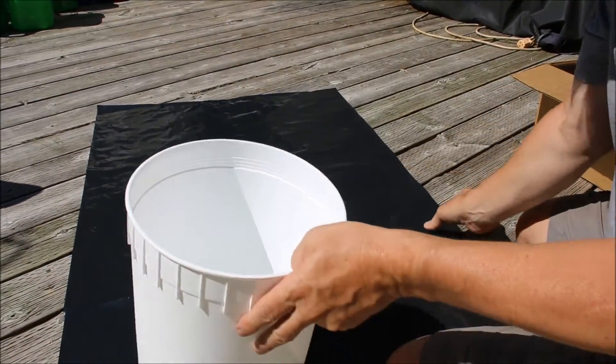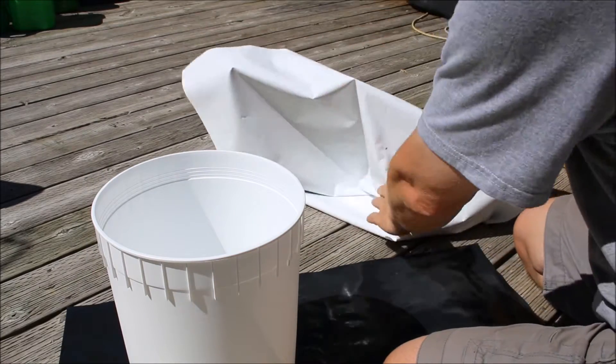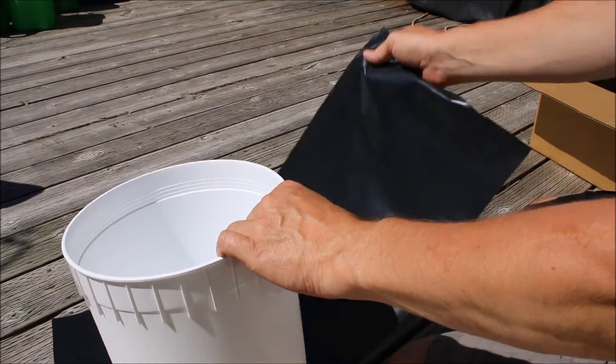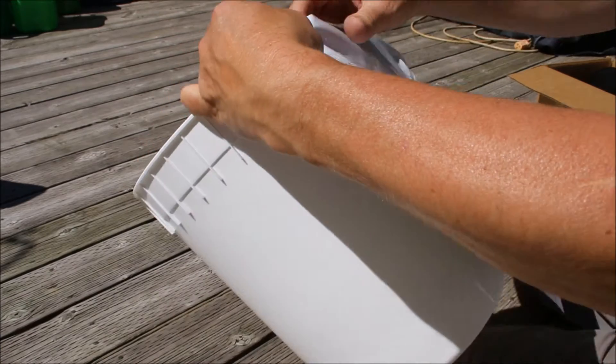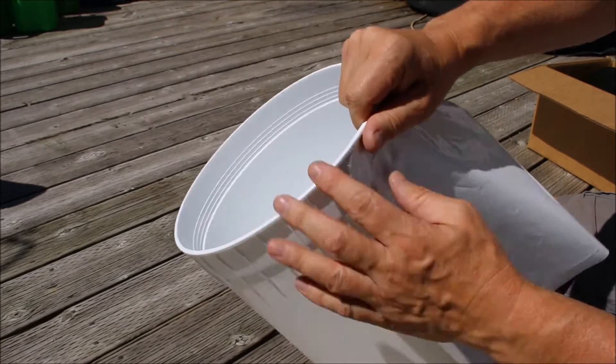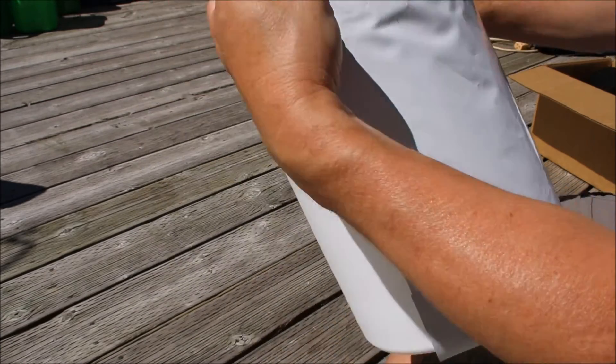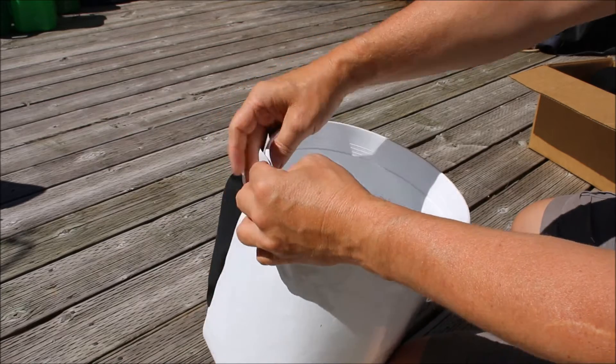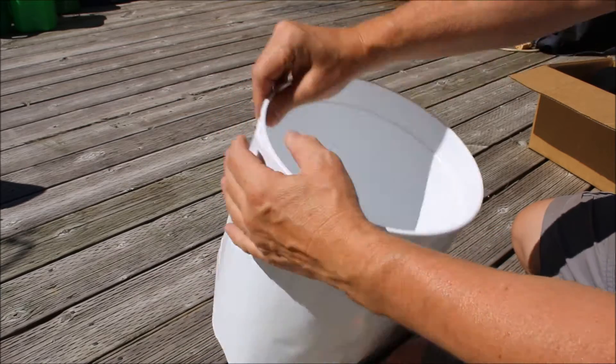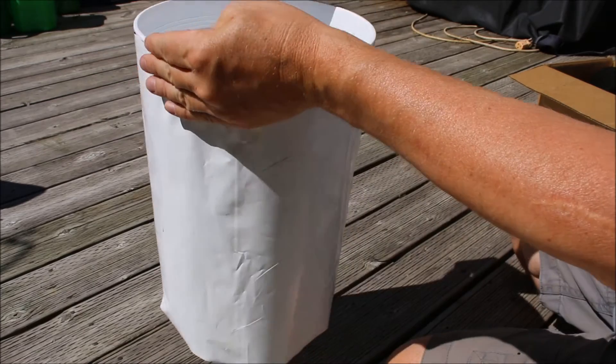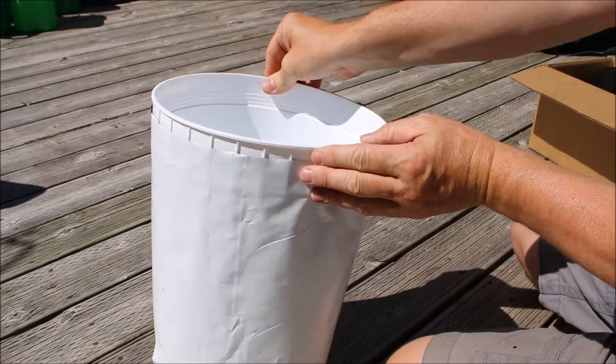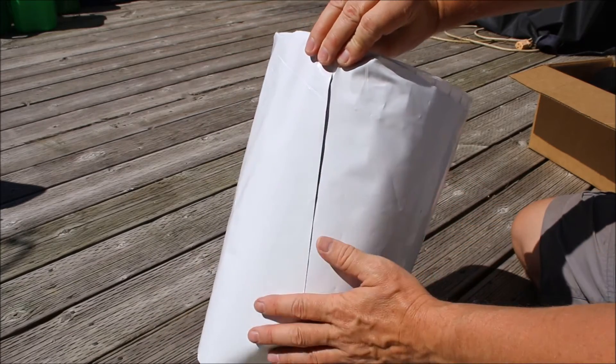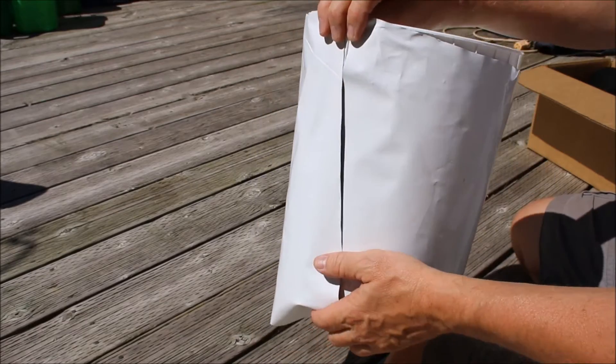There we go. Now we've got our piece of plastic which will nicely fit around this entire piece. Now what I'm going to do is I'm just going to take a piece of duct tape, white duct tape, and I'm going to seal this piece here.